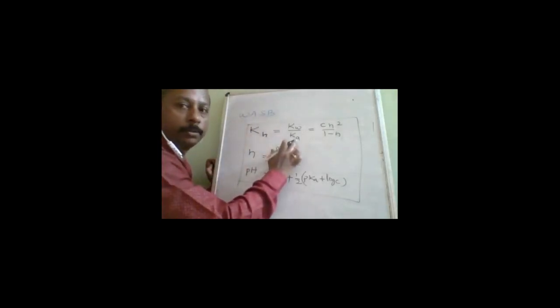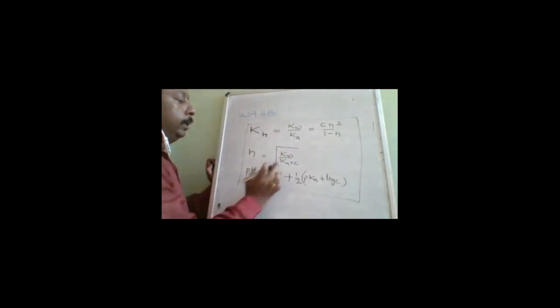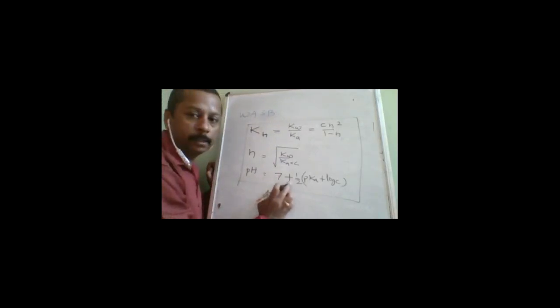These are the four formulas to remember for weak acid and strong base. The logic: weak acid means Ka is used; strong base means pH > 7, hence the formula has '7 plus'. If you understand the purpose behind each term, it becomes easy to memorize and adapt the formulas.